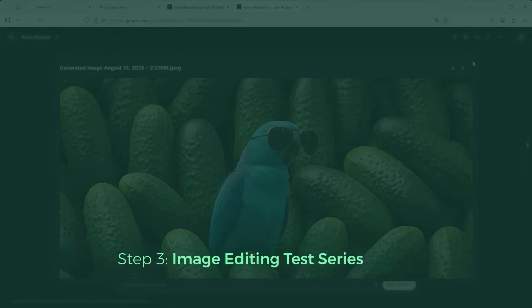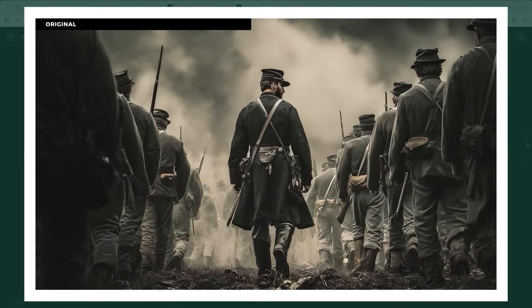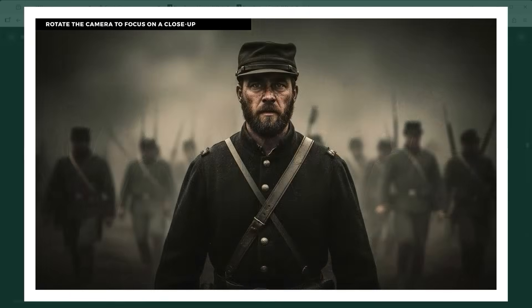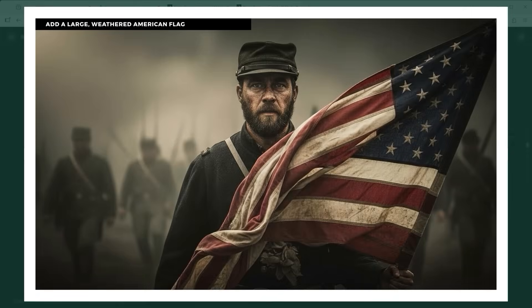Let's go back to the starting image — a photo from 1862, an officer with his soldiers. From this original I'm now telling a visual story through images, to show what Gemini 2.5 Flash — aka Nano Banana — can do. We begin by adding a drone; it shifts the camera upward and reveals the terrain in front of the soldiers. But now we want to know who is this officer bravely leading his men through the ruins. 'Rotate the camera to focus on a close up' gives us the answer. But wait — something's missing: the Stars and Stripes banner.